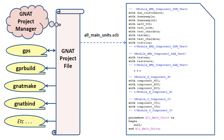For large applications, this process could take an hour or more. From the developer's perspective, the subprogram all_main_units serves to verify the build integrity of the subsystem. For example, after making several code changes in various modules, all_main_units is compiled and linked to confirm that the build is not broken.